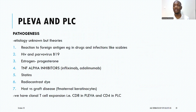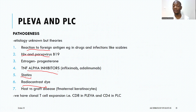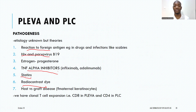Regarding etiopathogenesis, the exact trigger in PLEVA and PLC is not known. However, different theories have been put forward. These include: an abnormal reaction to foreign antigens, which can be drugs or infections like scabies; links to HIV and parvovirus B19 infection; hormonal contributions like estrogen and progesterone; and associations with drugs such as TNF-alpha inhibitors like infliximab and adalimumab, statins, and radiocontrast media used before contrast CT scans. Some theories suggest PLEVA arises as a graft-versus-host reaction, where maternal keratinocytes in the child's skin trigger an immune response.